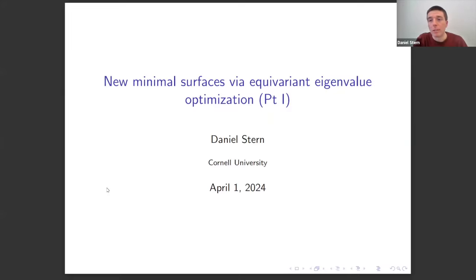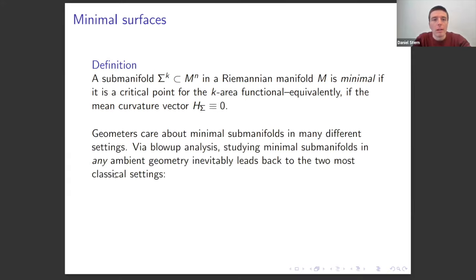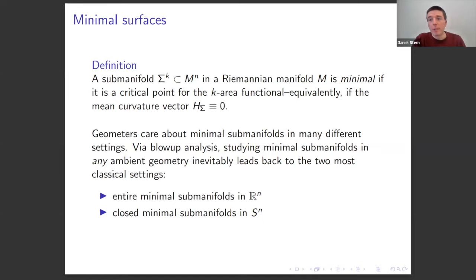The fundamental goal is really about minimal surfaces. A submanifold inside some ambient Riemannian manifold is said to be minimal if it's a critical point for the area functional of the right dimension, which is equivalent at the PDE level to saying the mean curvature vector vanishes. These are classical objects going back to the 1700s. If you care about minimal submanifolds in any setting, you'll be particularly interested in closed minimal submanifolds in the sphere.